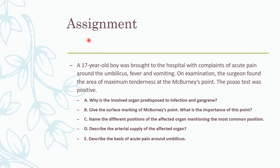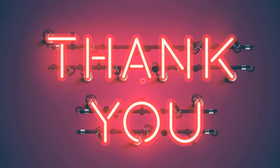This is all from the lecture. The assignment is: a 17-year-old boy was brought to the hospital with complaints of acute pain around the umbilicus, fever, and vomiting. On examination, the surgeon found maximum tenderness at McBurney's point and the psoas test was positive. You need to identify the involved organ and explain why it is predisposed to infection and gangrene, give the surface markings of McBurney's point and its importance, name the different positions of the appendix (especially the most common), describe the arterial supply, describe the basis of acute pain around the umbilicus, and draw the different positions of the appendix.